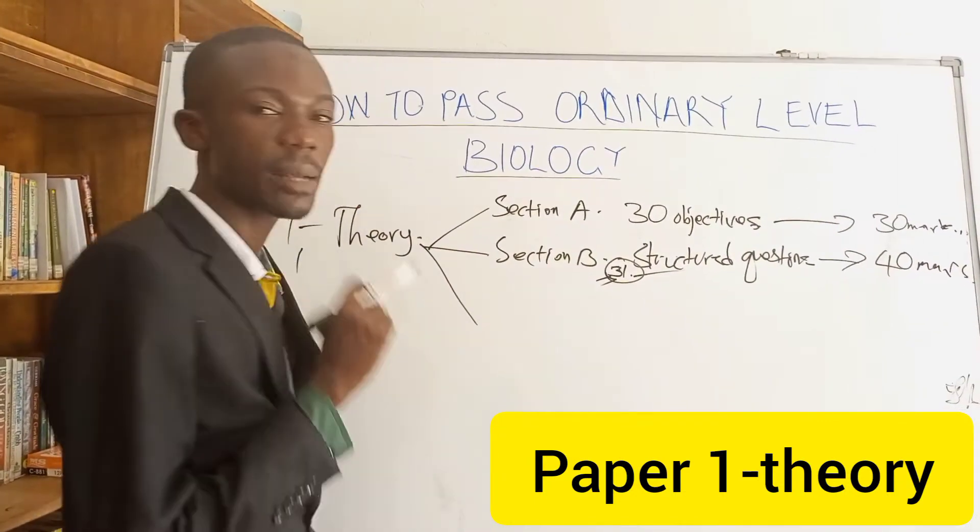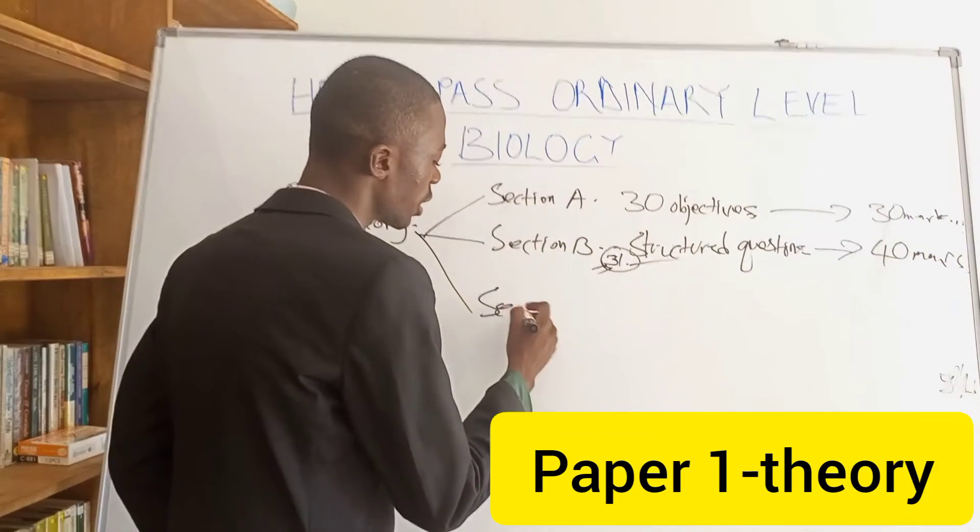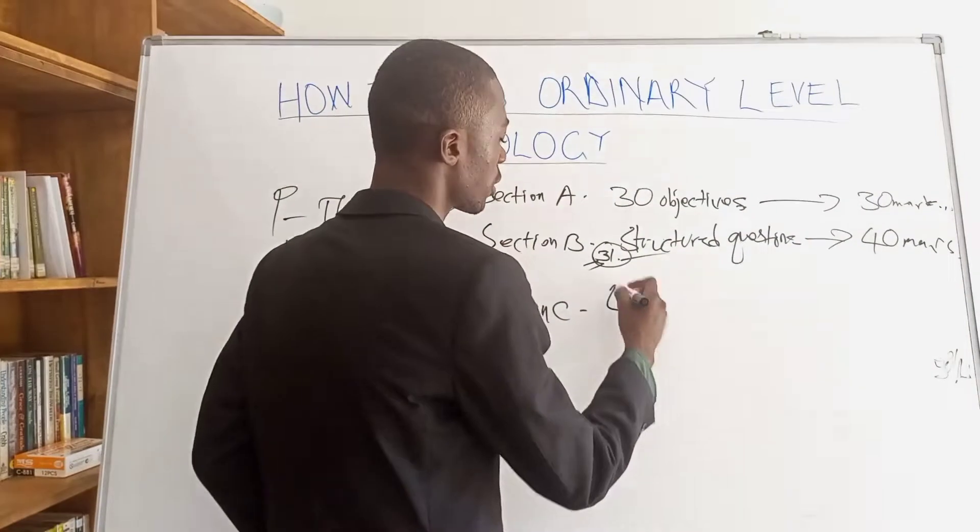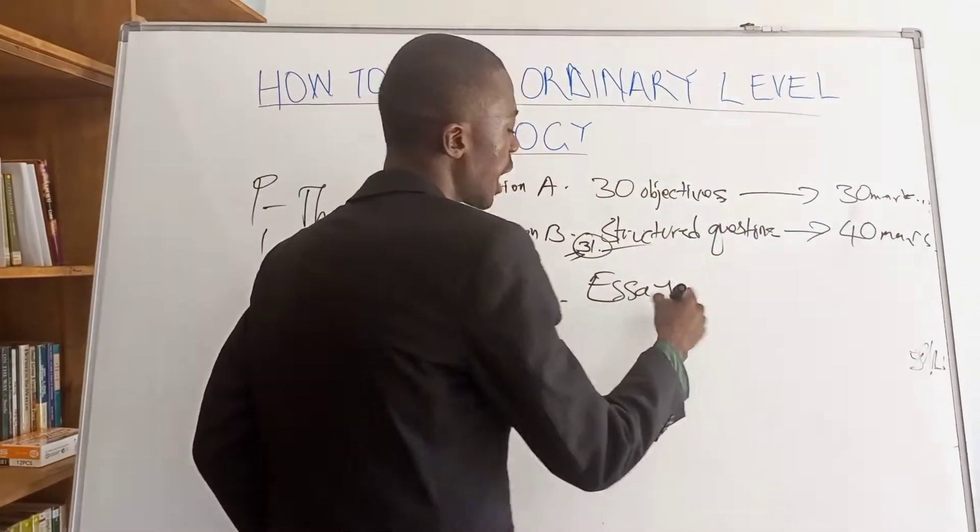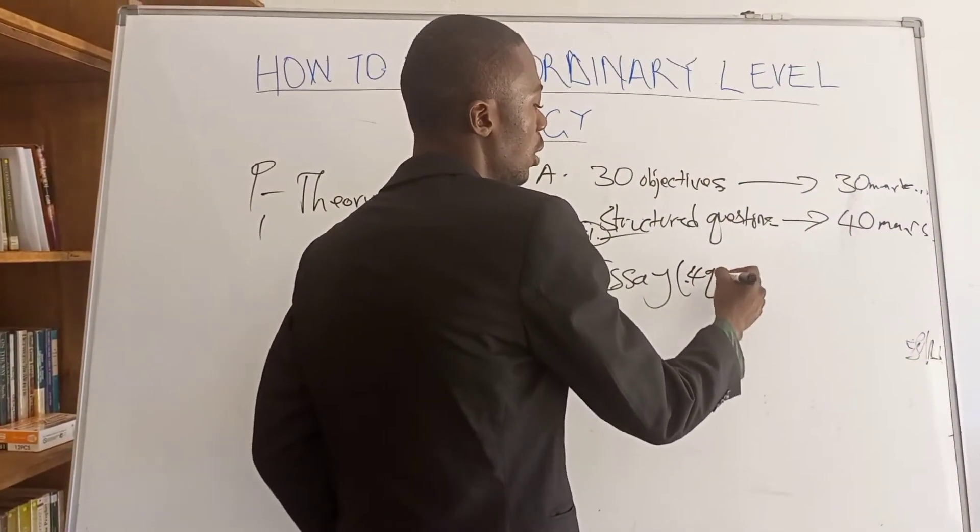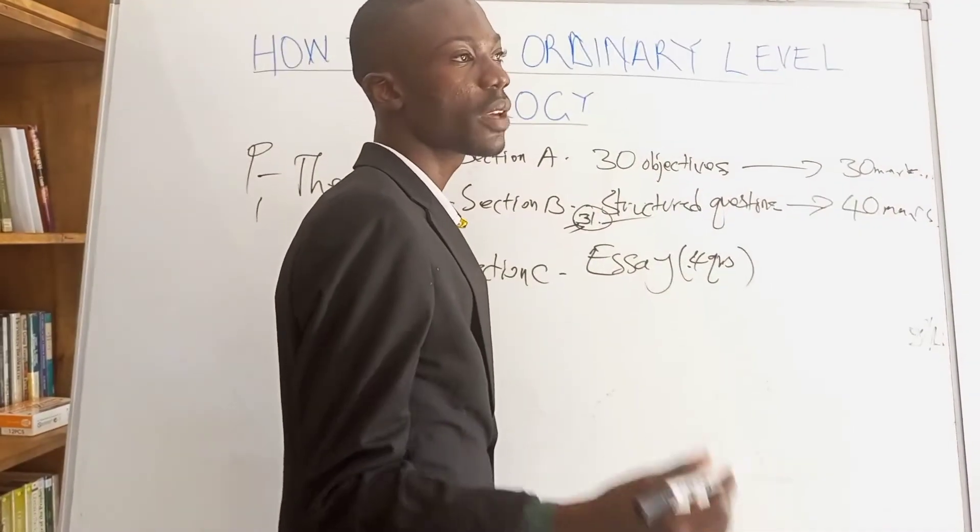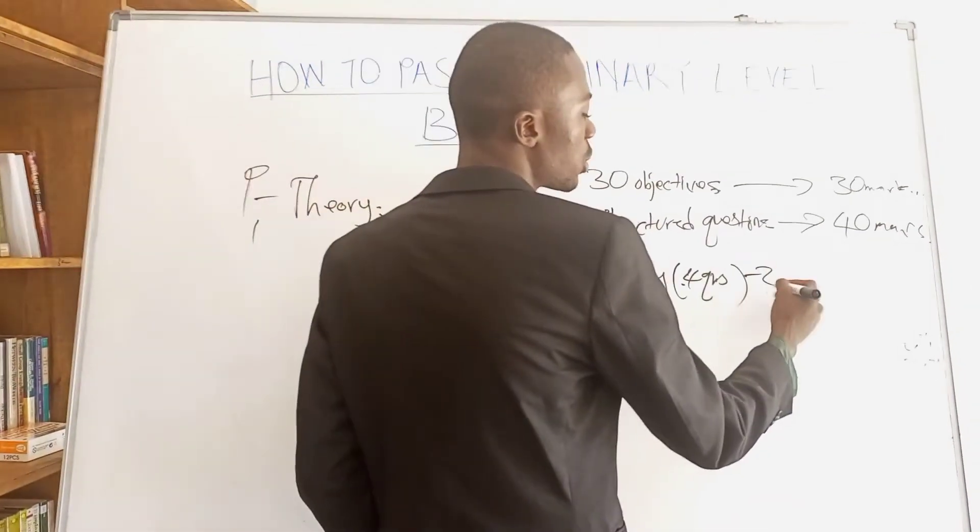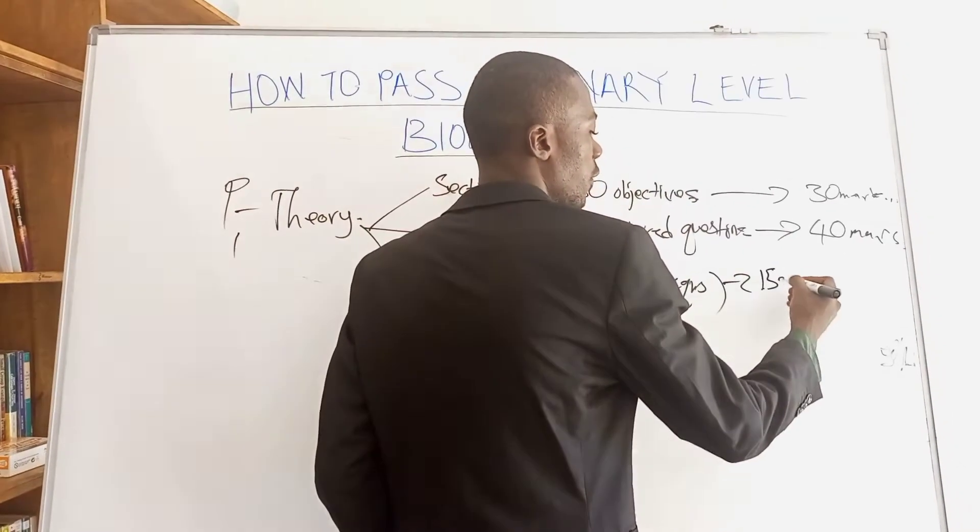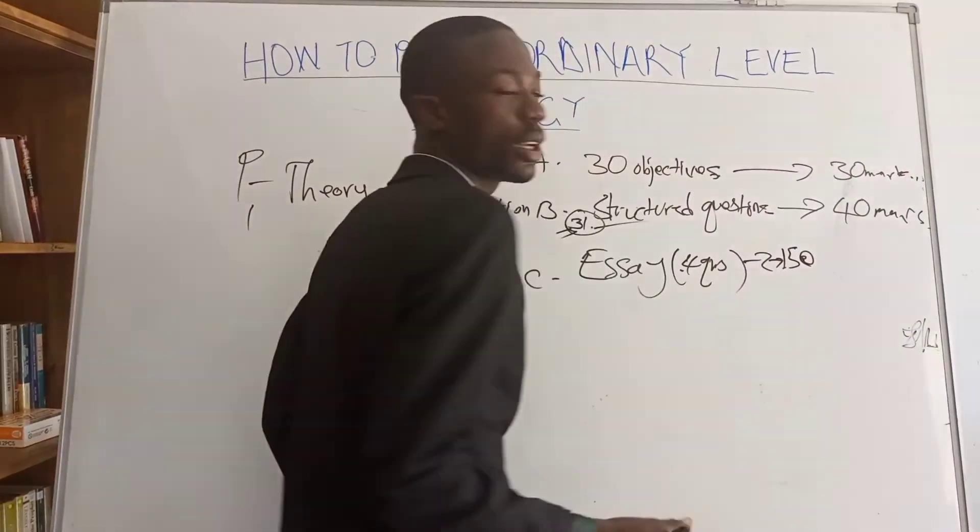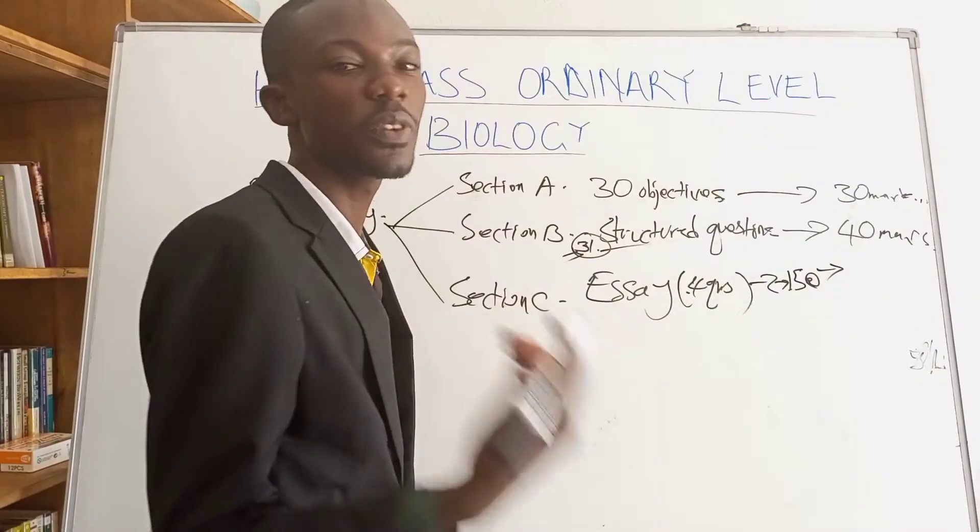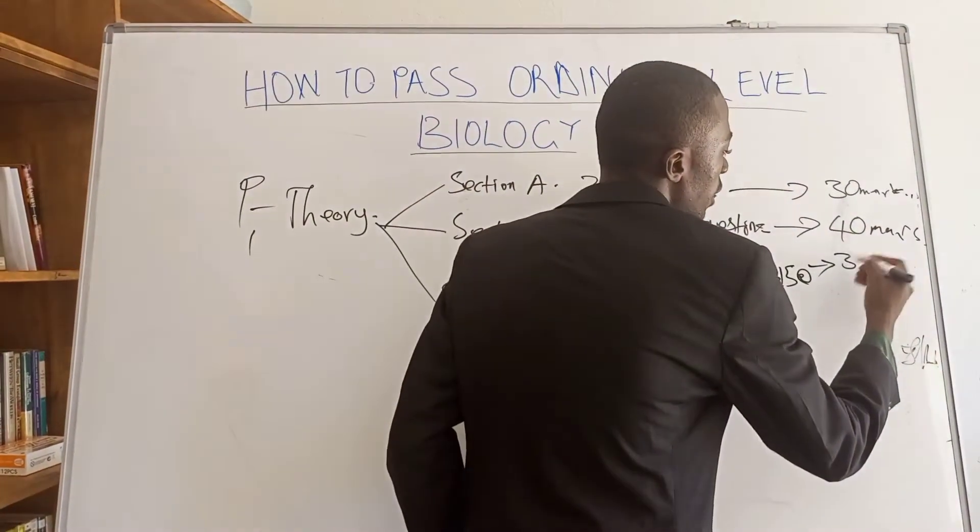And then finally, when it comes to theory paper 1, the last section is section C. In section C, you have essay questions, essay type of questions. In these essay types of questions, they will bring four questions. There will be four, but out of the four questions, you will choose two. You will choose only two. And the two you will choose will be 15 marks each. Therefore, if you get all of them, that will be 15 times 2, that's 30 marks.